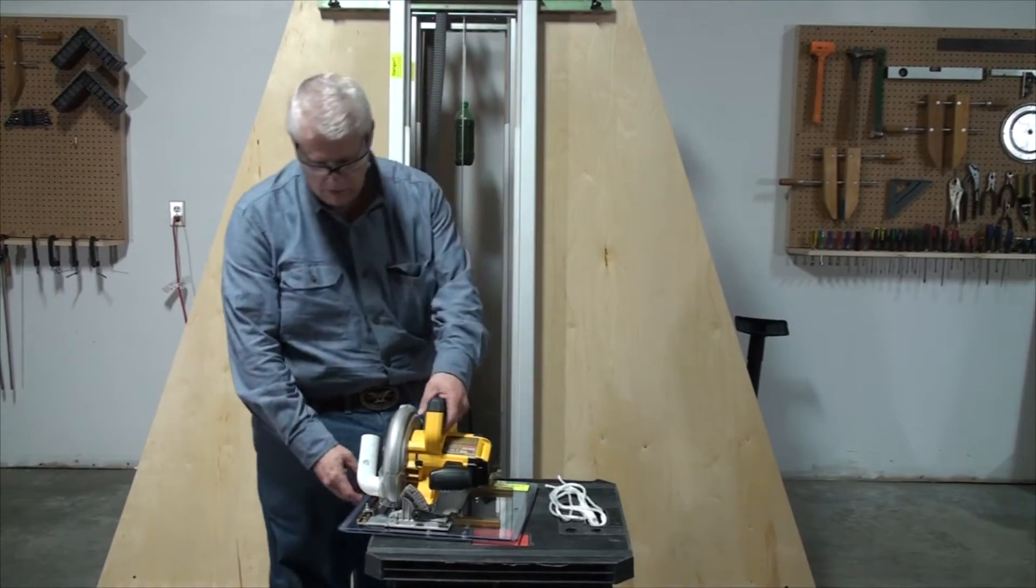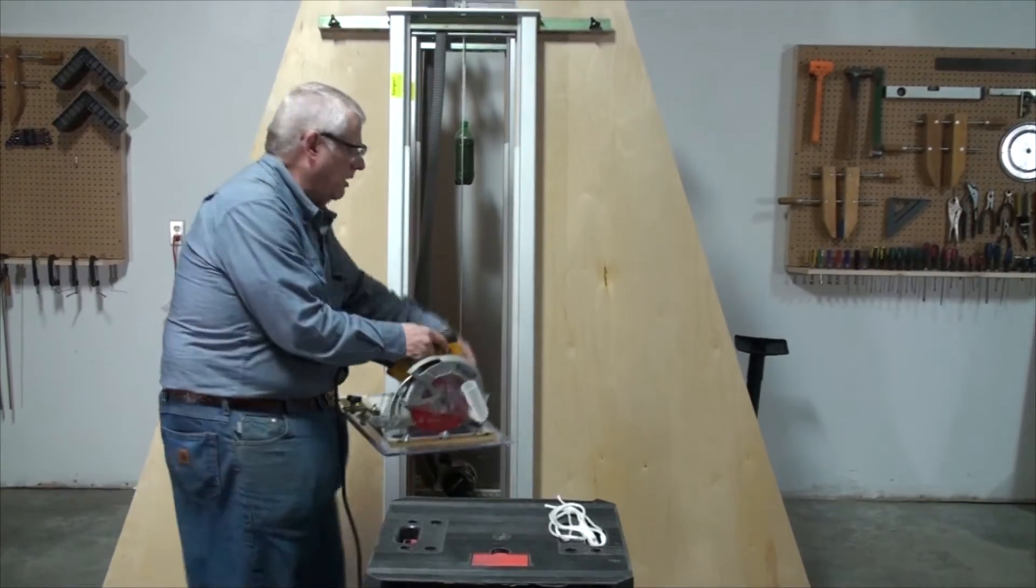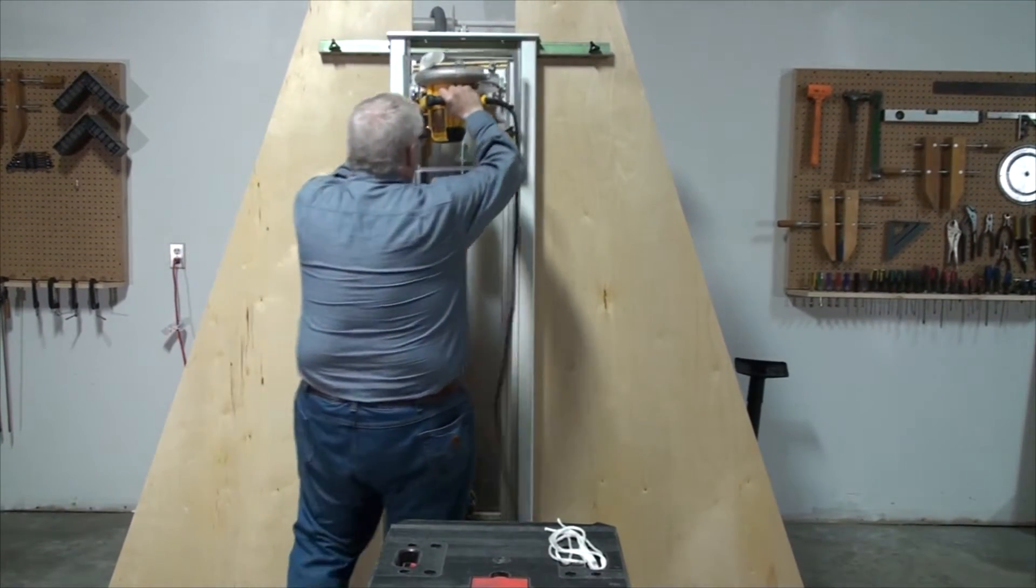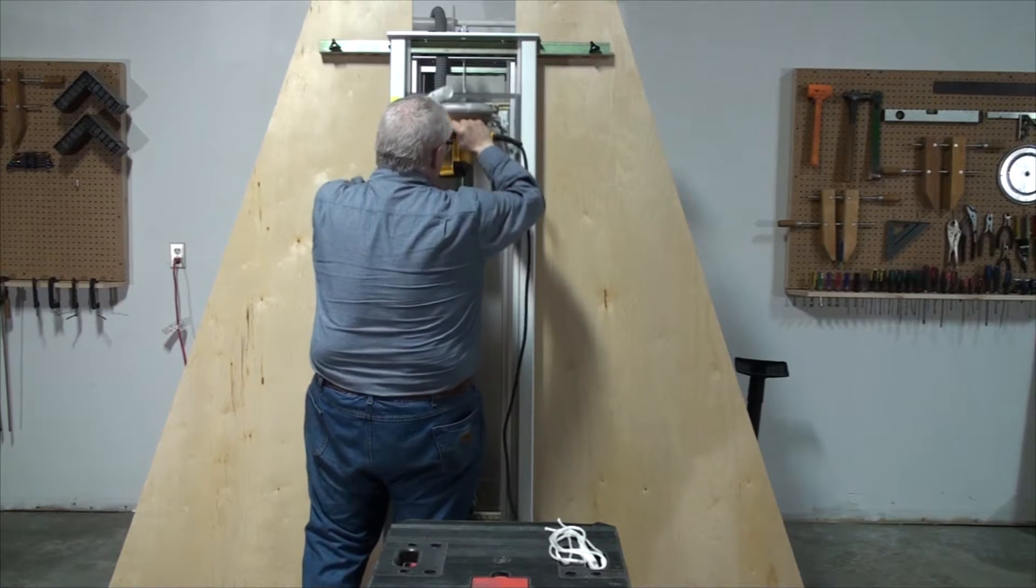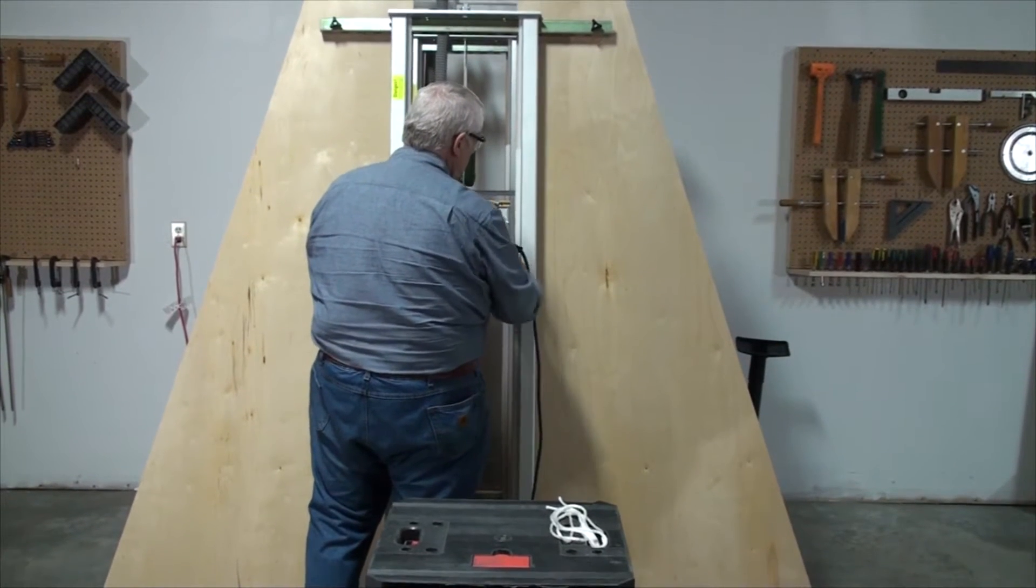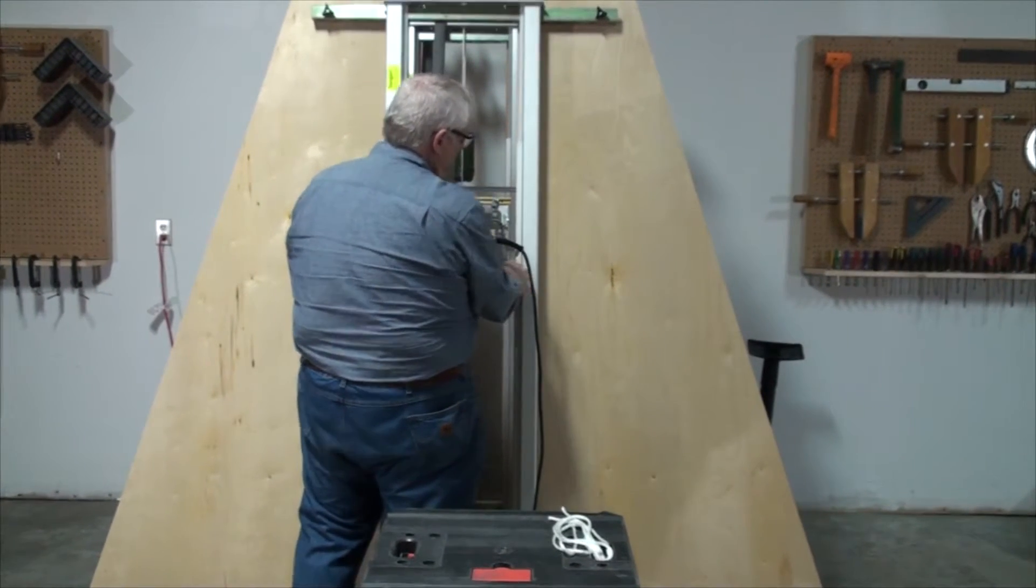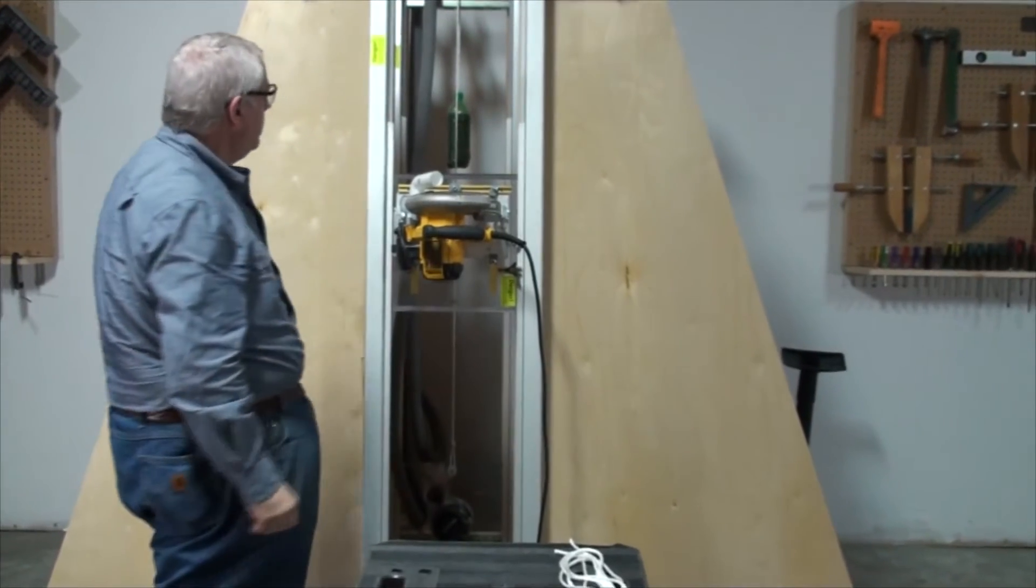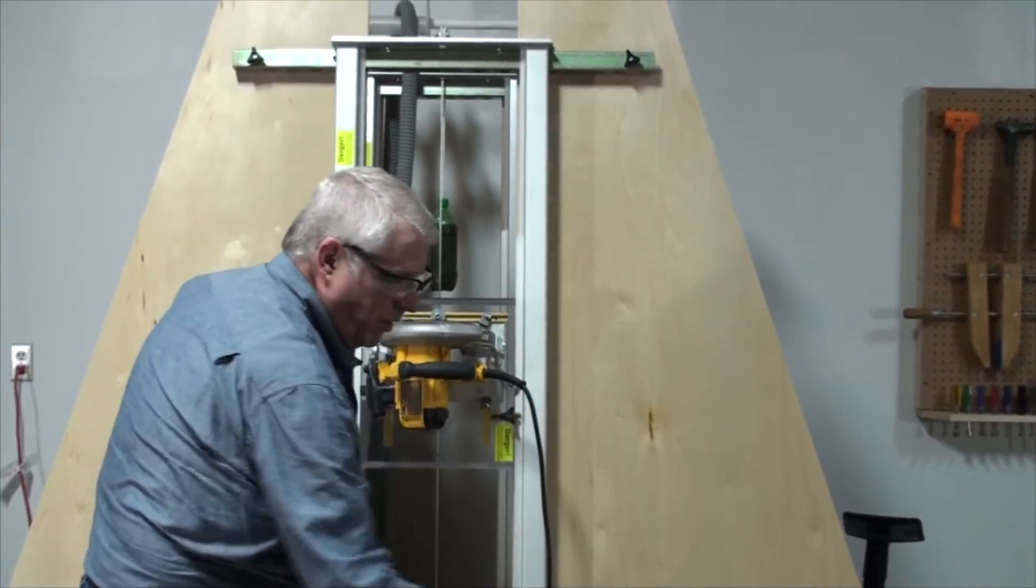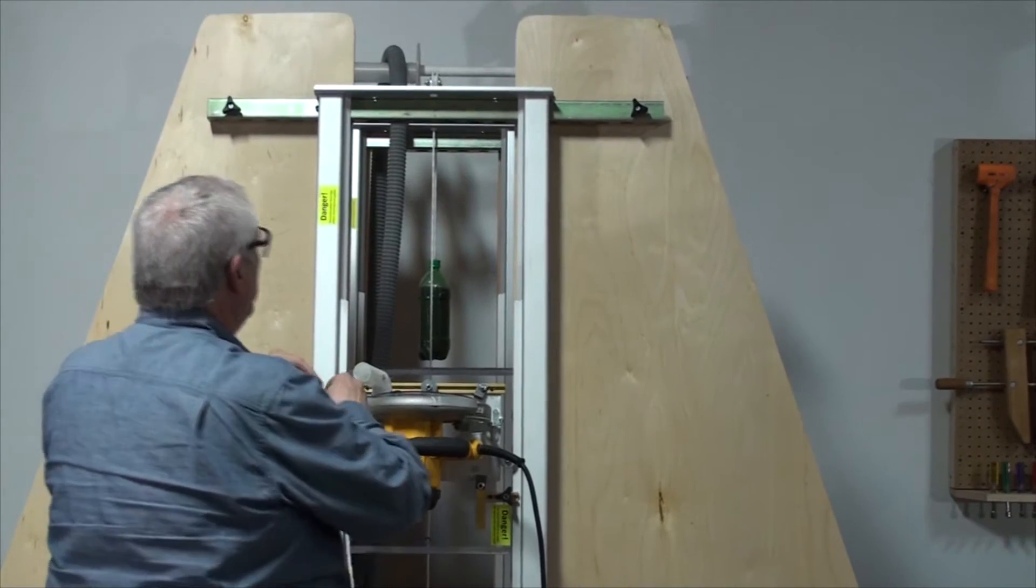Very good. With the saw mounted on the carriage, we'll just put it into the swap saw. Tighten the rip stop down so it's locked in place. And we're now ready to put the rope on for the counterweight.